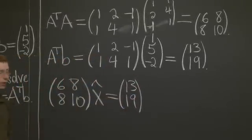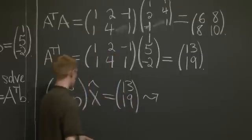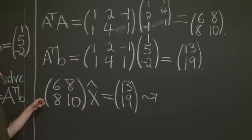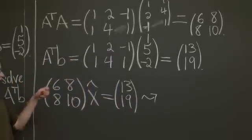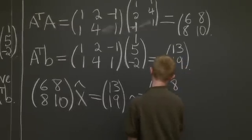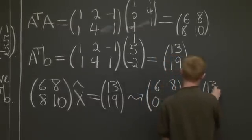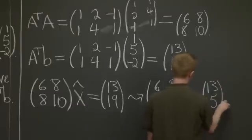And we remember how to do this just by using elimination. We replaced the second row by 3 times the second row minus 4 times the first row. Again, I'm going to do this quickly because you know this from other parts of the class.